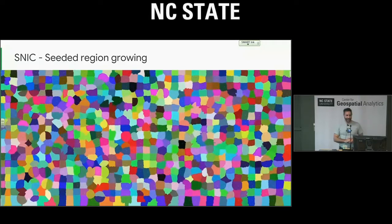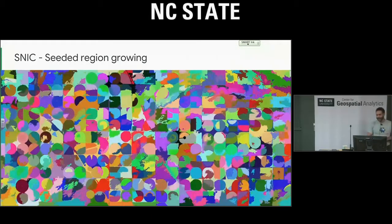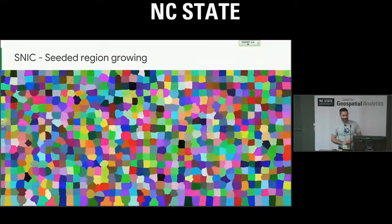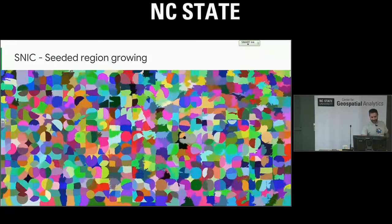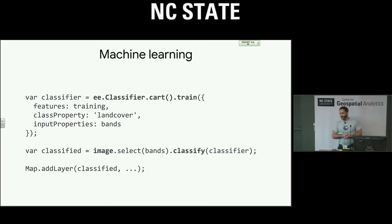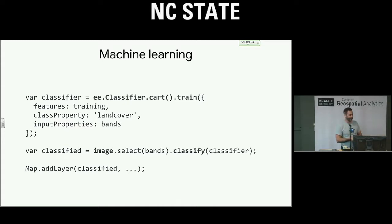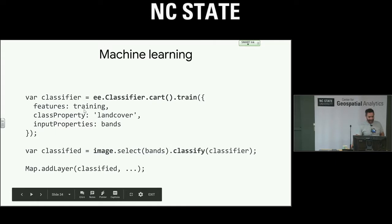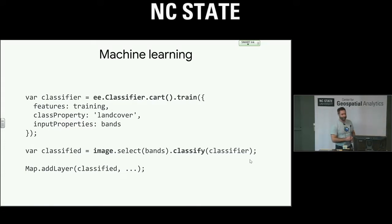SNIC-based region merging is a newer thing we have — you can do object-based analyses on relatively high-res image data. For machine learning — us old-timers used to call this classification — we have lots of classifiers, and some can be operated in regression mode too, like classification and regression trees. You supply some training data, tell it the property that's the response variable, tell it the predictors, select the bands from the image, classify it with the trained classifier, and add it to the map. Not too bad.